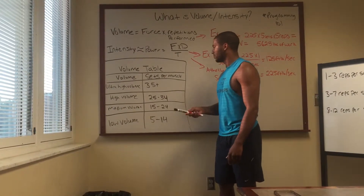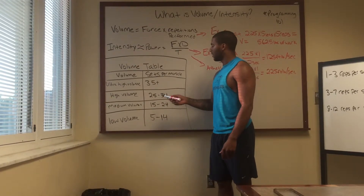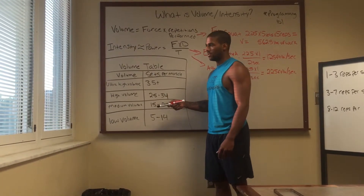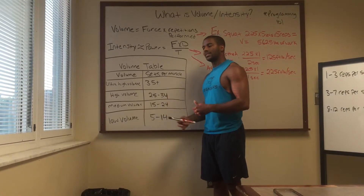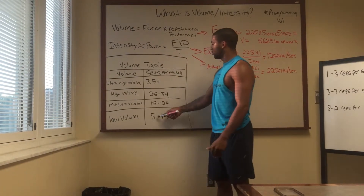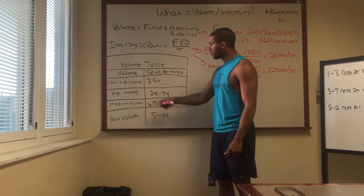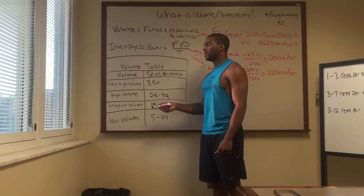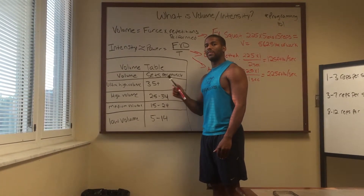What does that mean practically? Say it's squat day or leg day. You start with five sets of squats — you're here in the low volume range. You add four sets of lunges and now you're at nine sets. Then you add three sets each of leg press, leg extensions, and hamstring curls, adding more sets — you're climbing into medium and then high volume. The more sets you do, the higher the volume.